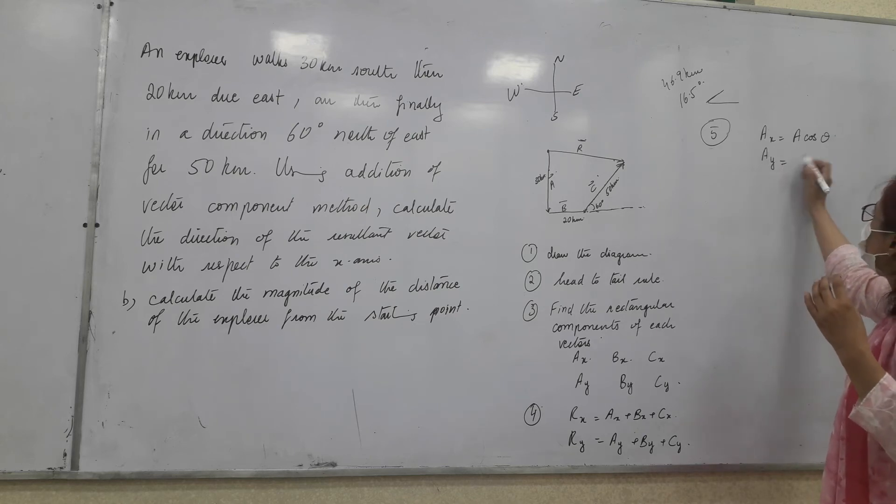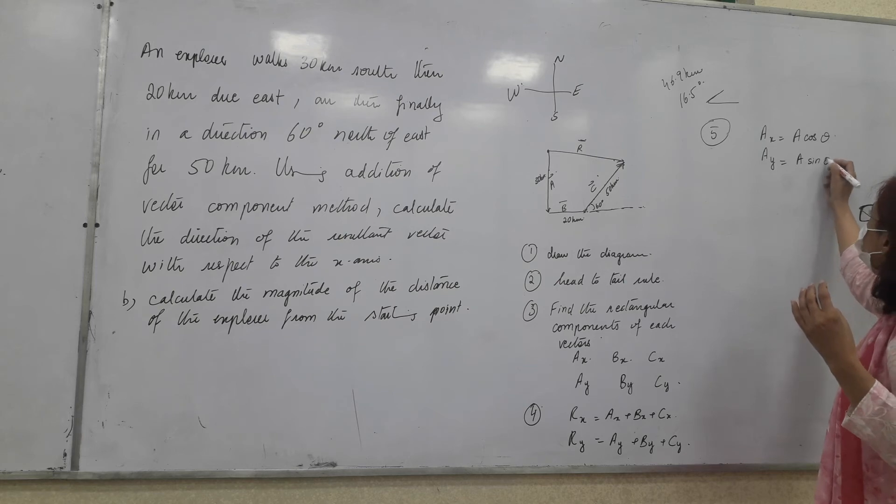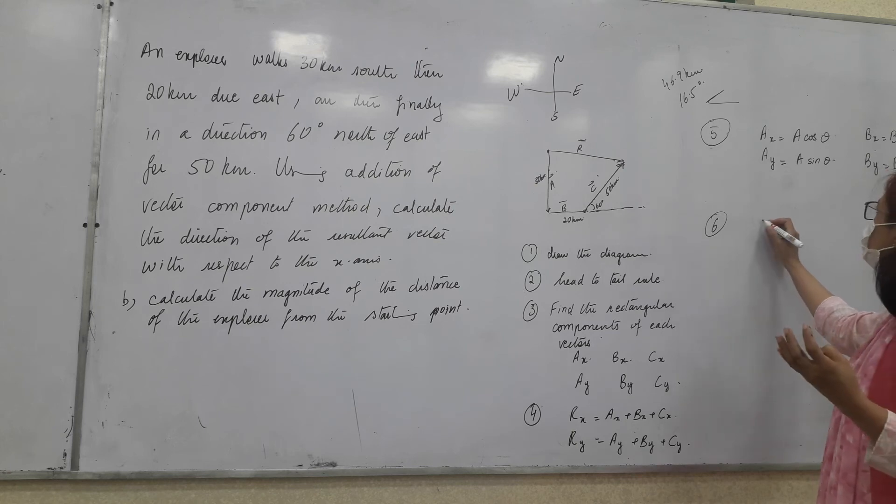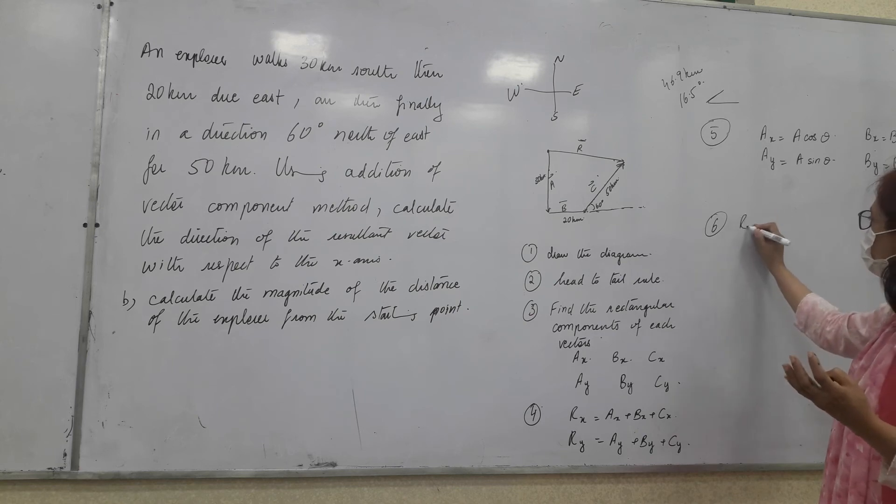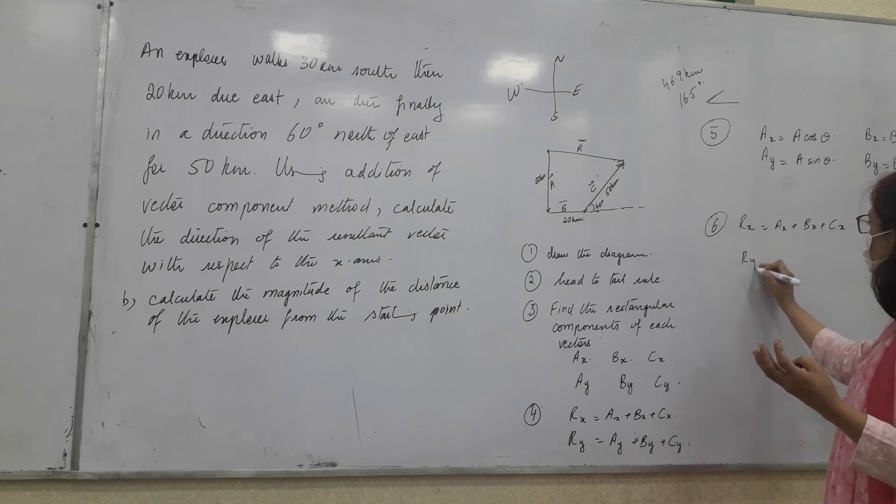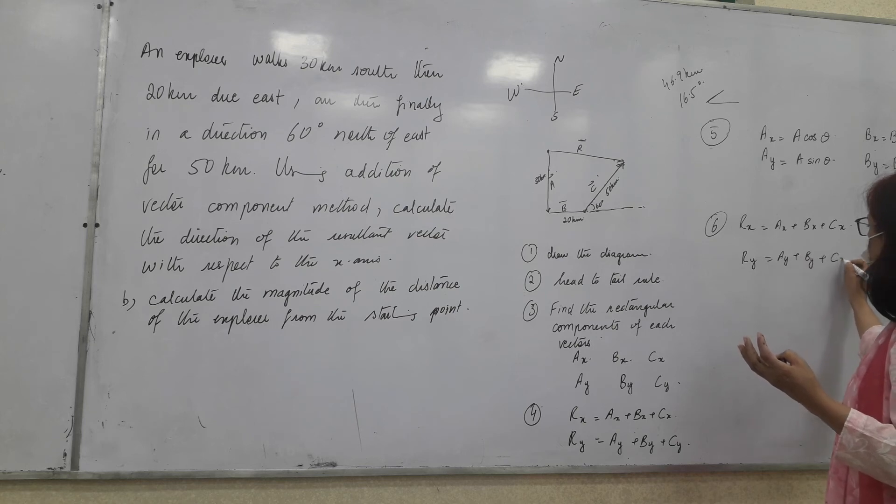Similarly, Bx is equal to B cos theta. By is equal to B sin theta. Cx is equal to C cos theta. When you find this, what will you do next? We will use this to find Rx is equal to Ax plus Bx plus Cx. And then, Ry is equal to Ay plus By plus Cy. Okay. What next?